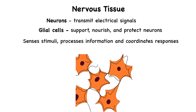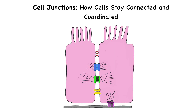Together, these four tissue types combine in various ways to form every structure in the body, from simple membranes to complex organs. To build a functional tissue, cells must not only exist side by side — they must communicate, adhere, and coordinate their activities. That's where cell junctions come in. These specialized structures link cells physically and functionally, and they are especially important in tissues where cells must maintain tight control over what enters, exits, and moves between them.